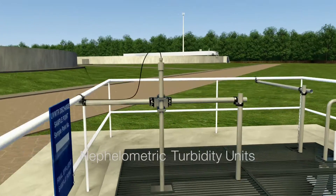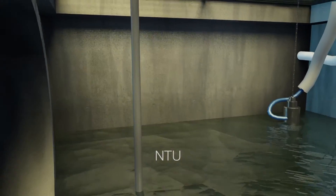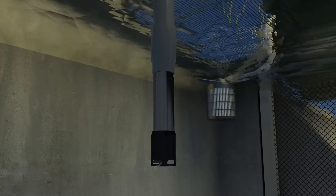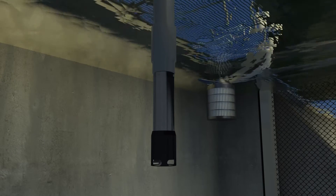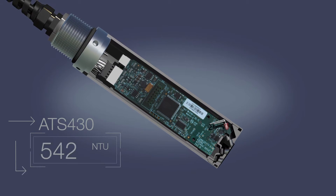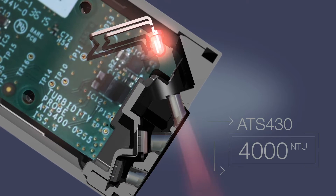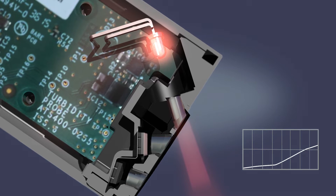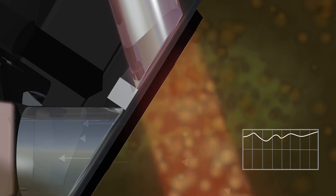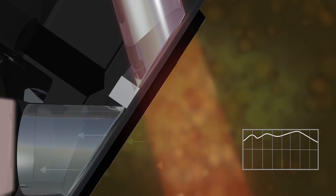Expressed in nephelometric turbidity units, the ATS-430 uses internationally approved nephelometric measurement technology to accurately measure turbidity concentrations up to 4,000 NTU. The sensor directs a beam of infrared light into the sample. The light beam is scattered by particles in the sample, and the scattered light intensity is measured by the sensor's photodetector positioned at 90 degrees to the light beam.